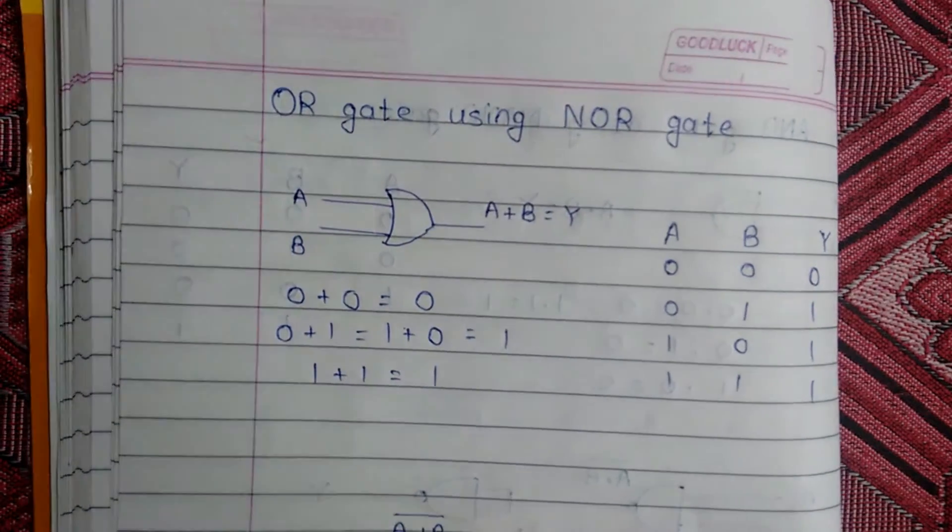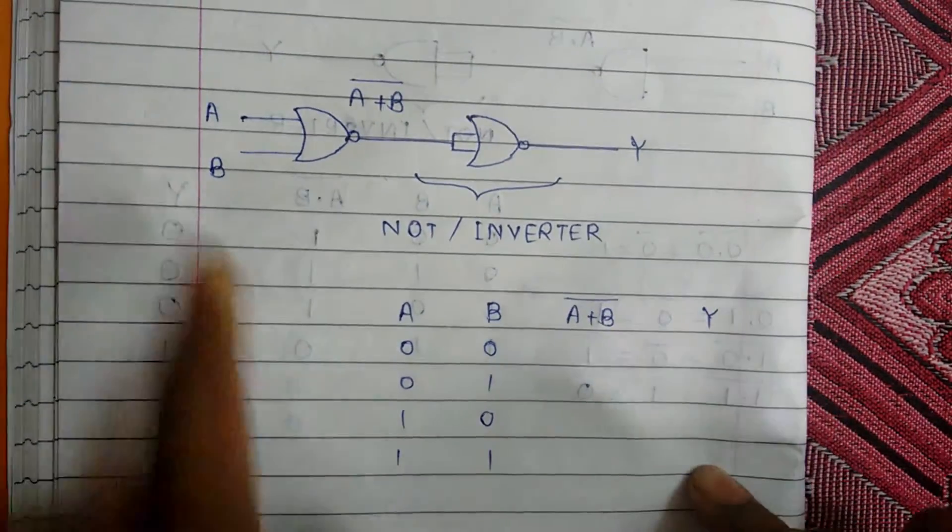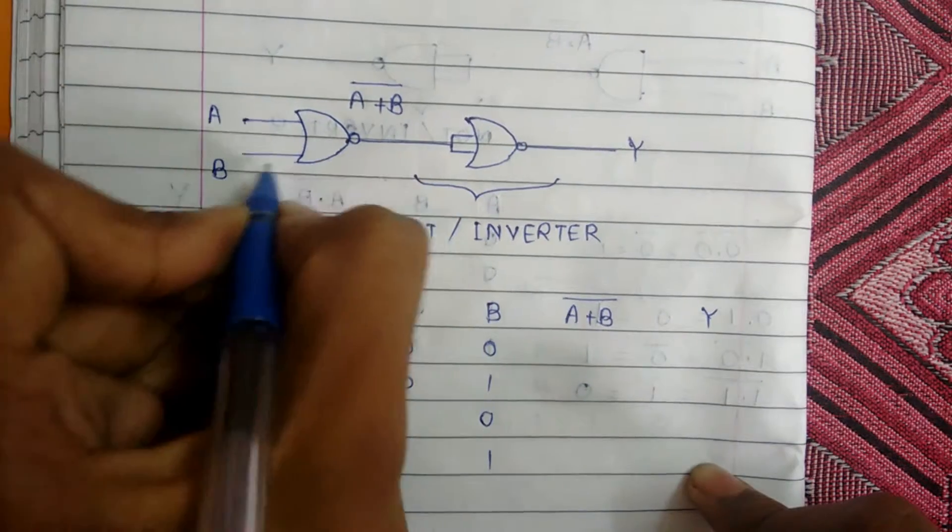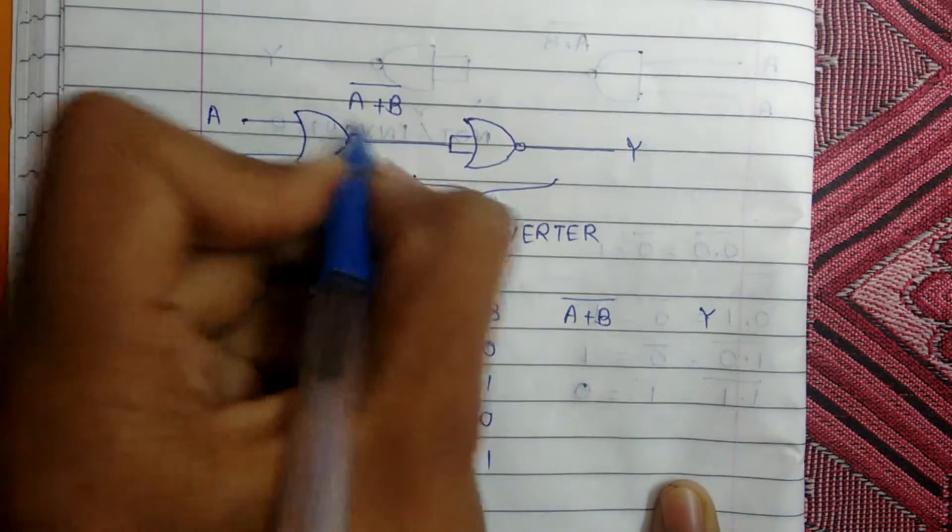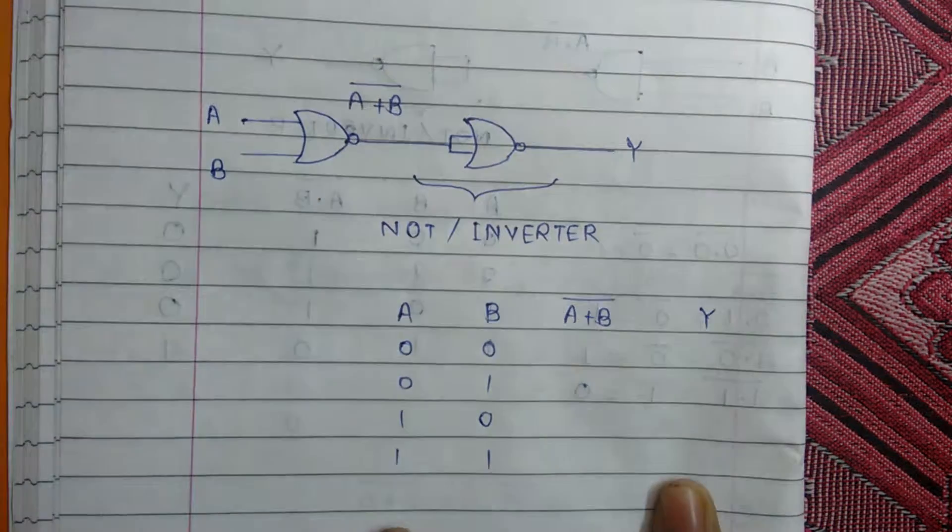We can construct OR gate using NOR gate also. So consider this structure. If you give both inputs A and B to a NOR gate, then our output of this would be A plus B and its complement.